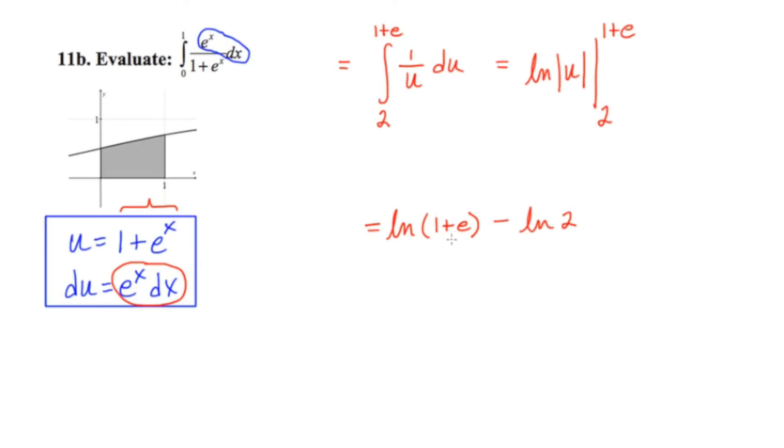Now one thing that I could do is realize that we have a difference of logs, so I can write this as a single log by condensing. This would come from the log of a quotient, and that quotient would be 1 plus e over 2.